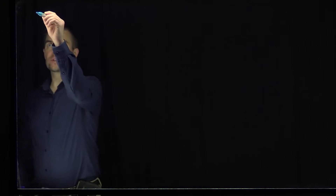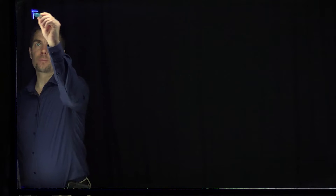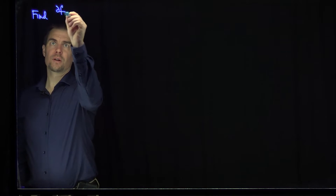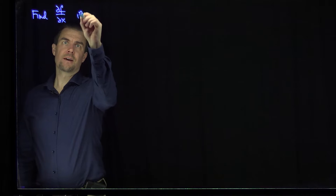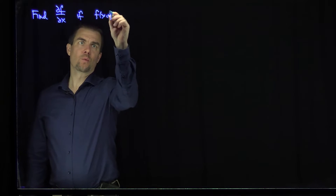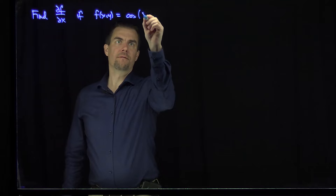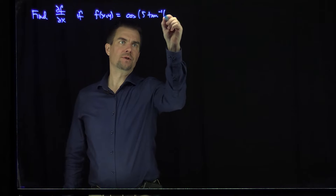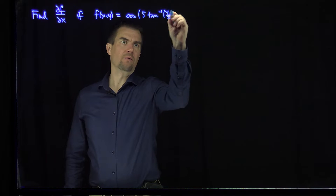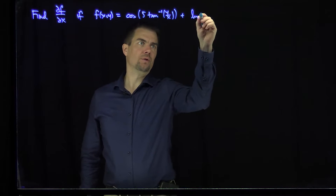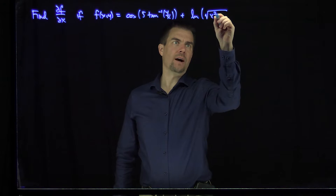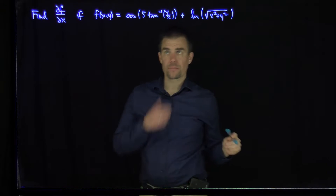Hello, students. In this video, we'll see an example of using the chain rule to make a derivative calculation simpler. In particular, we're going to consider finding partial f partial x, where f of x and y is the cosine of 5 tangent inverse of y over x, plus the natural log of the square root of x squared plus y squared.